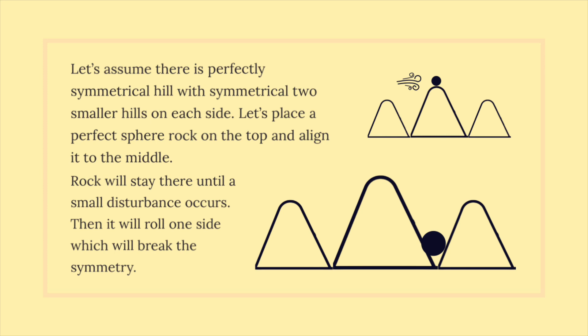Let's assume there is a perfectly symmetrical hill with two smaller symmetrical hills on each side. Let's place a perfect sphere rock on the top and align it to the middle. The rock will stay there until a small disturbance occurs. Then it will roll to one side, which will break the symmetry.